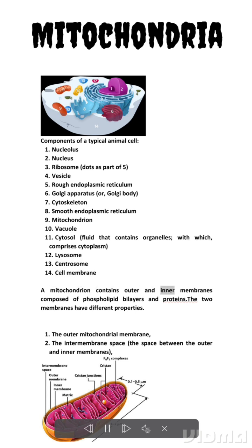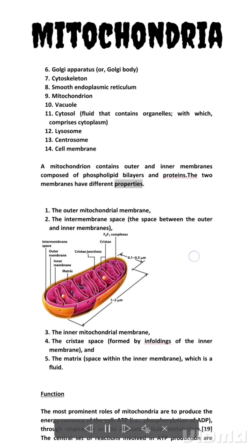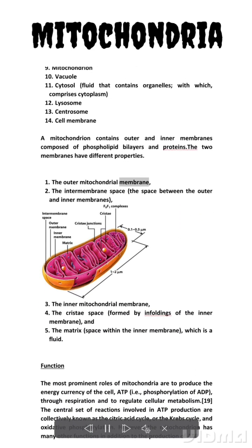A mitochondrion contains outer and inner membranes composed of phospholipid bilayers and proteins. The two membranes have different properties: the outer mitochondrial membrane, the intermembrane space (the space between the outer and inner membranes), the inner mitochondrial membrane, and the cristae space.